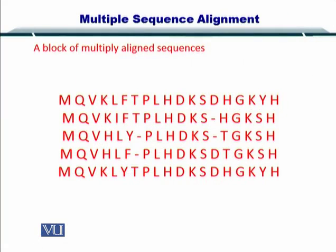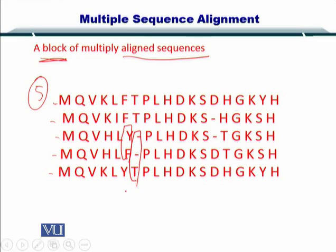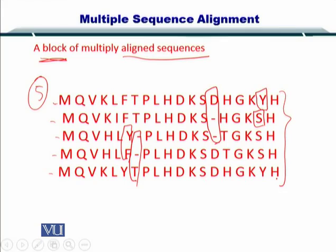Here we have several sequences — five of them — that have been aligned, and we call them a block. If you look closely, you can see that there are some mismatches or substitutions, and there are some gaps as well. But the five sequences are aligned very nicely, and this is what can be achieved by employing multiple sequence alignment strategies.